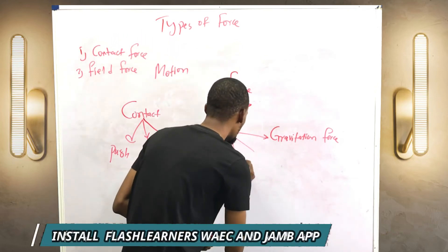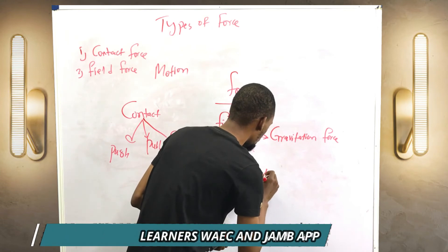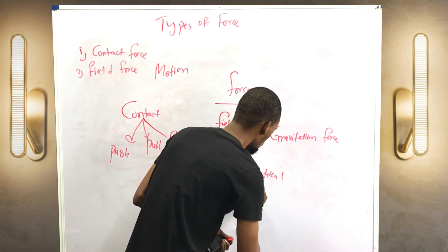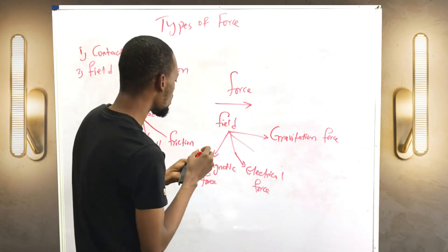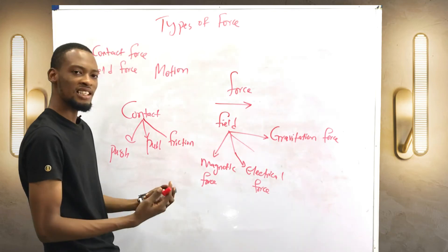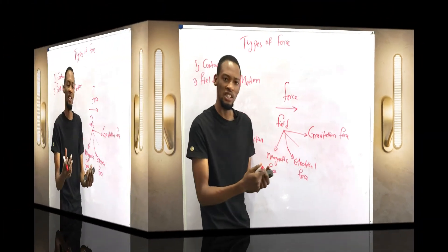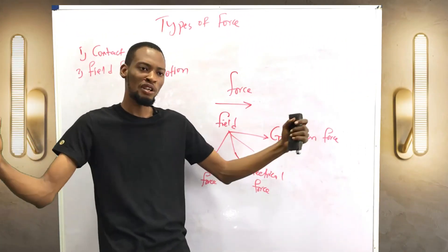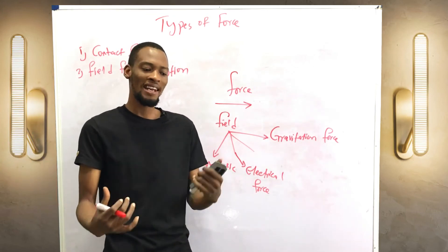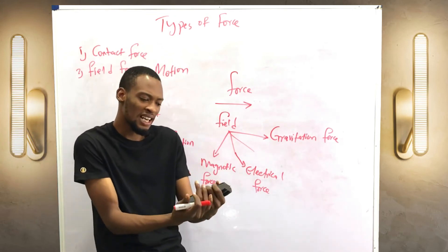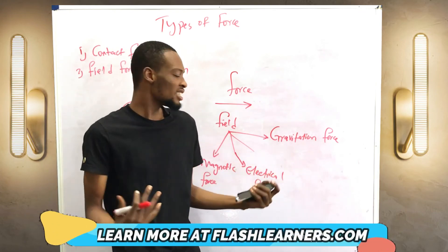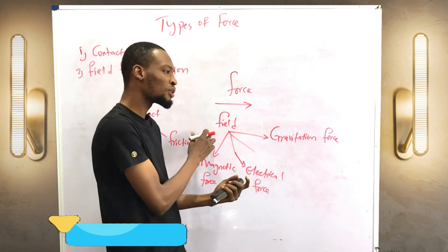And another example is electrical force. Electrical force is a field force in the sense that when you have two charged bodies, when like charges are charged, there is a force bringing them together. While like charges, plus and plus, they repel each other. So that force between the charged bodies is a field force because there is no contact between them.